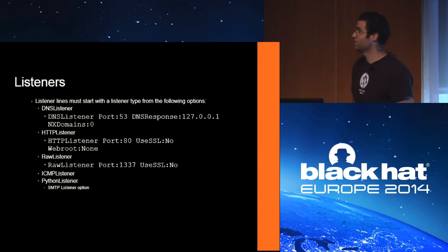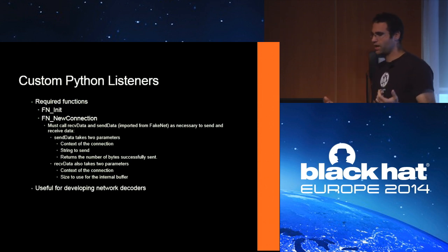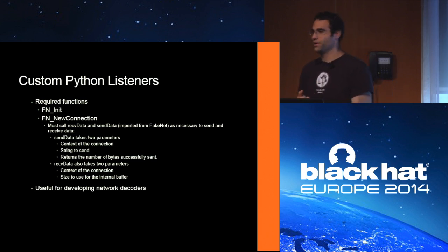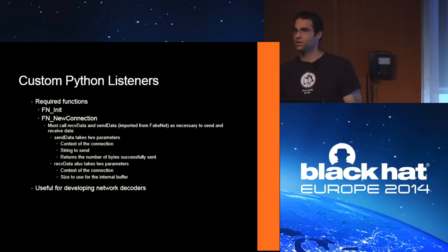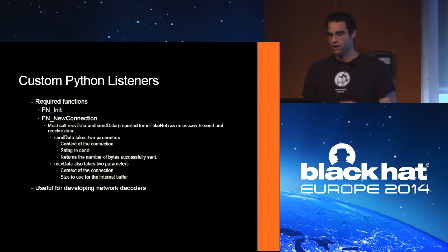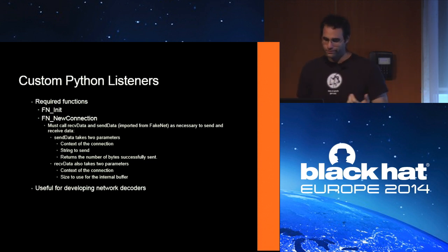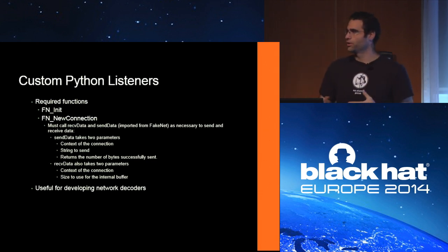The Python extension listener also works with HTTPS. For Python listeners you have to write two functions: an init function that gets called when you run, and a new connection function that gets called whenever there's a new connection. You call send and receive data whenever you want to communicate with the other side. It's super useful when dealing with malware that has custom encodings or custom protocols.